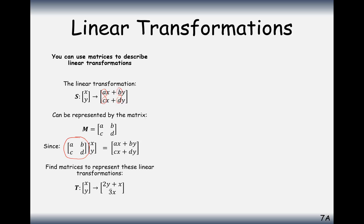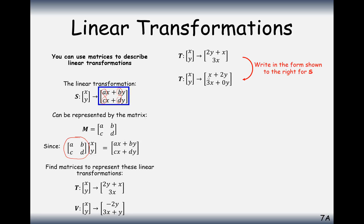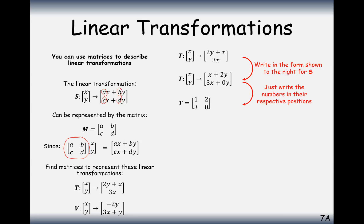Let's find the matrix for the transformation 2y plus x for the x-coordinate, and 3x for the y-coordinate. I'll rearrange the top so the x comes before y. Written in standard form it's 1x plus 2y on top and 3x plus 0y on the bottom. Pulling off the coefficients: 1 and 2 on the top row, 3 and 0 on the bottom row — the zero is there because there are no y's on the bottom.